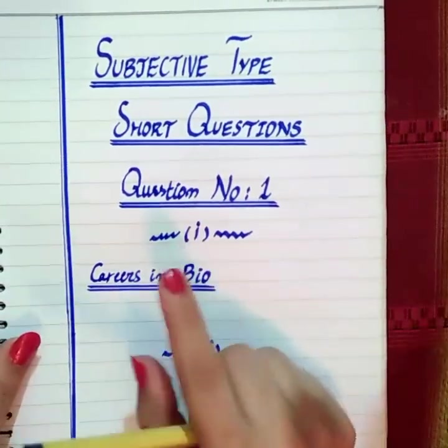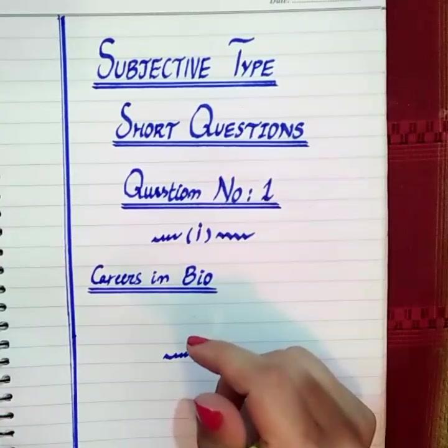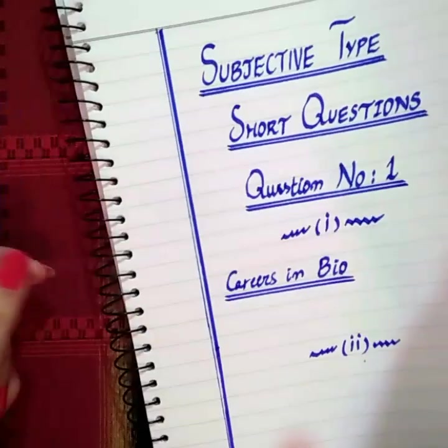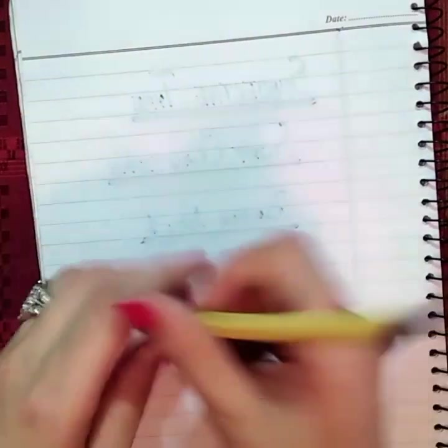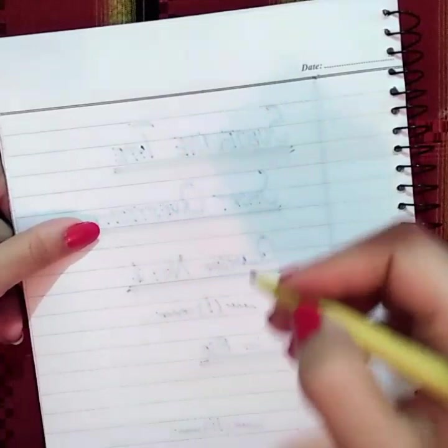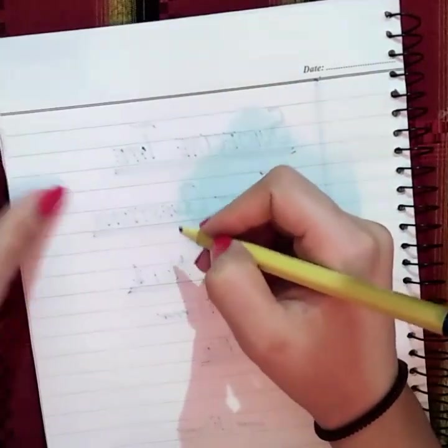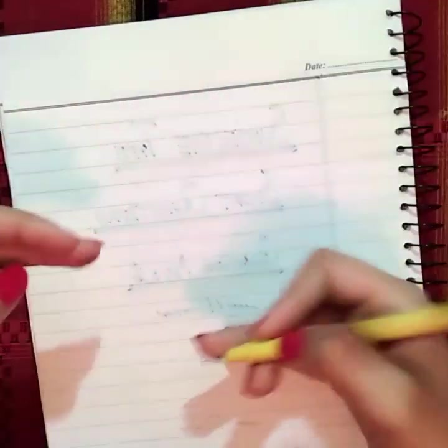You can underline your headings at the end of your paper as well; it depends upon your time. Now, how to make diagrams in biology — suppose I want to make a leaf. I am making a diagram for a short question, so it should not be a large size diagram.